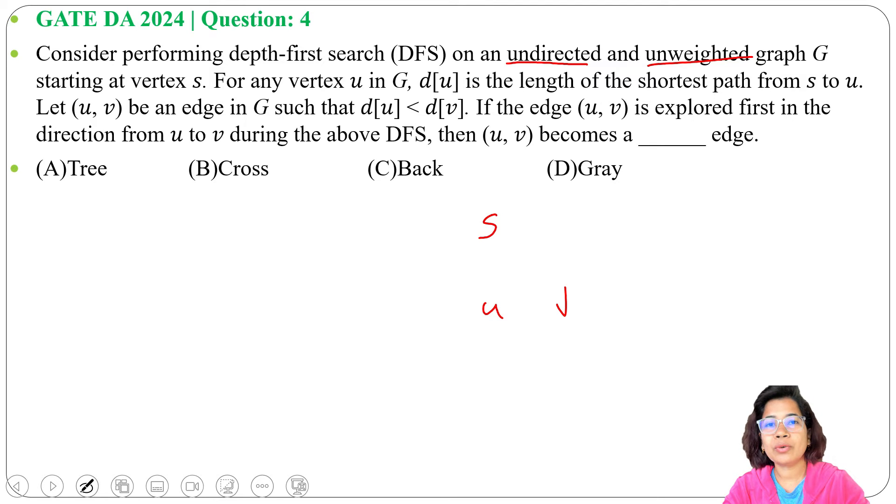Means there is an edge led S to U and U to V. So d[u] is 1, length from S to U is 1, and d[v] is 2 from S to U and U to V.